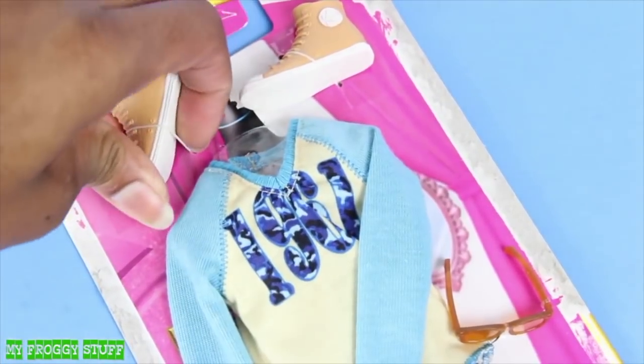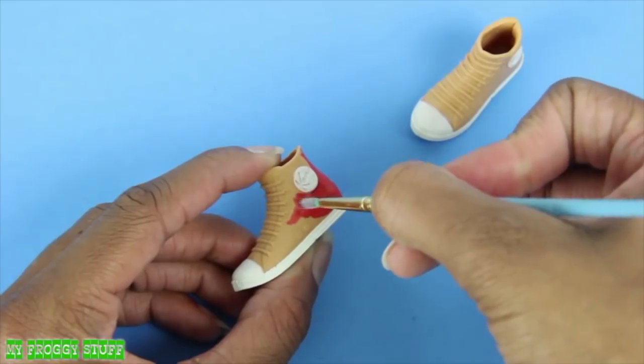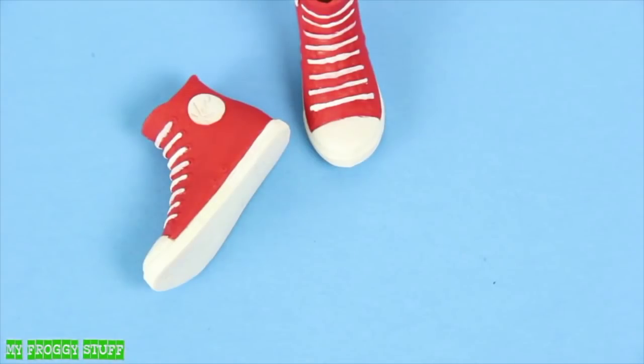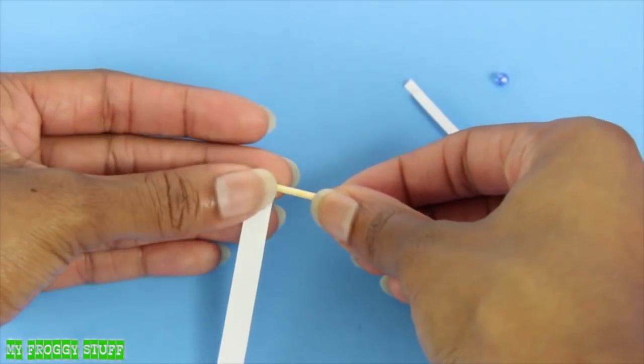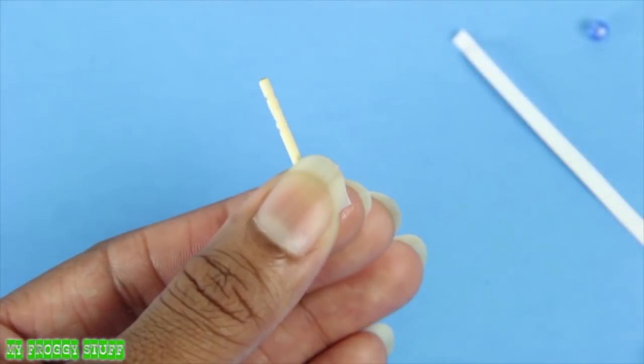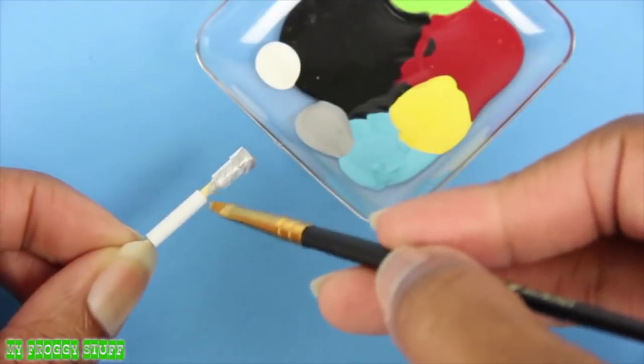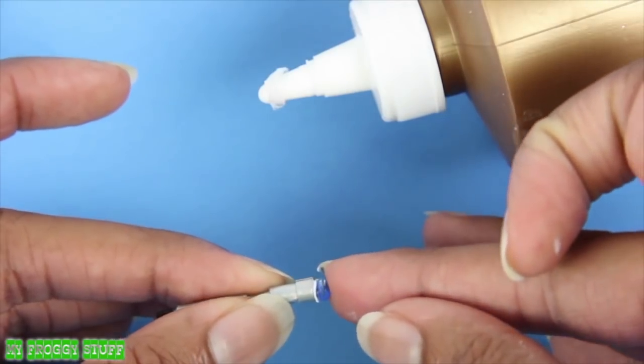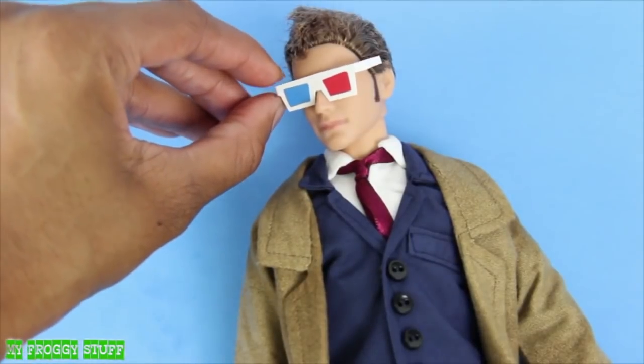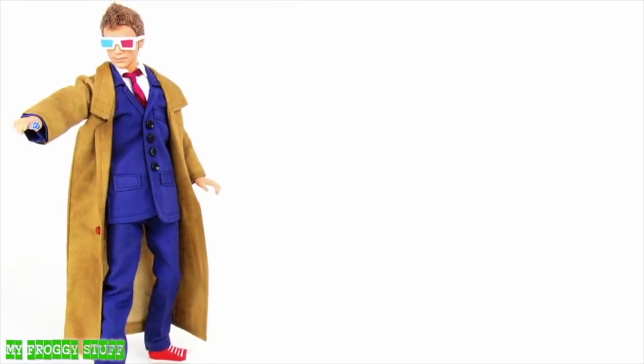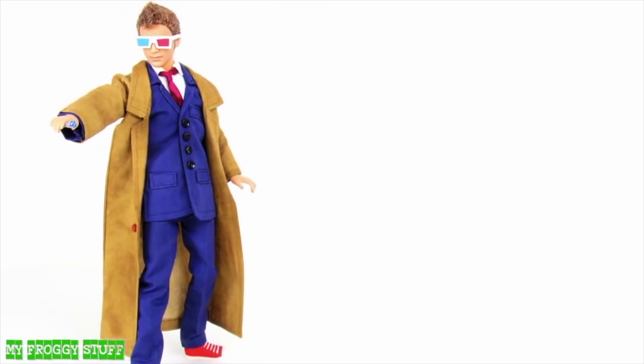We took a pair of shoes for Ken, repainted them with acrylic paint to make his shoes. Take a toothpick, cut it down to size, wrap it with strips of paper using glue to secure the ends. Paint it, glue a bead on the end to make a sonic screwdriver. Add a pair of 3D glasses from one of our previous videos. And you're done. Happy customizing.